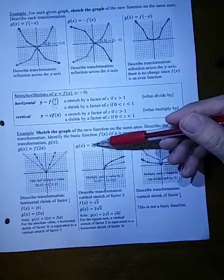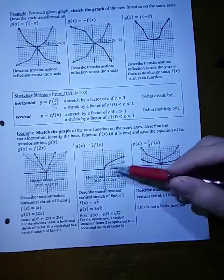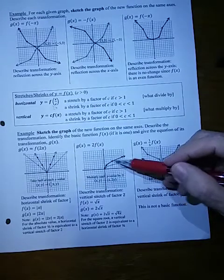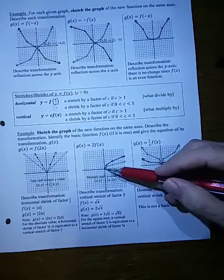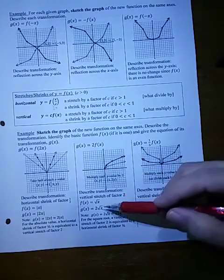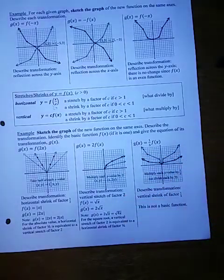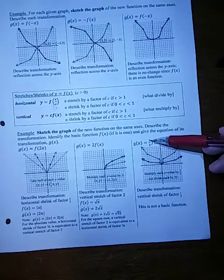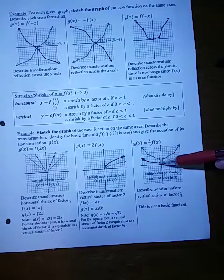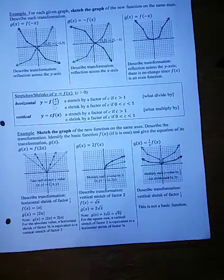2 times f of x is a vertical stretch by factor 2 — we're doubling the y value. We recognize this as the square root function, so this transformation gives 2 times the square root of x. If we don't know the parent function, we can't name it or write the new function. A vertical shrink of one-third means we take each y and divide by 3, shrinking it towards the x-axis.